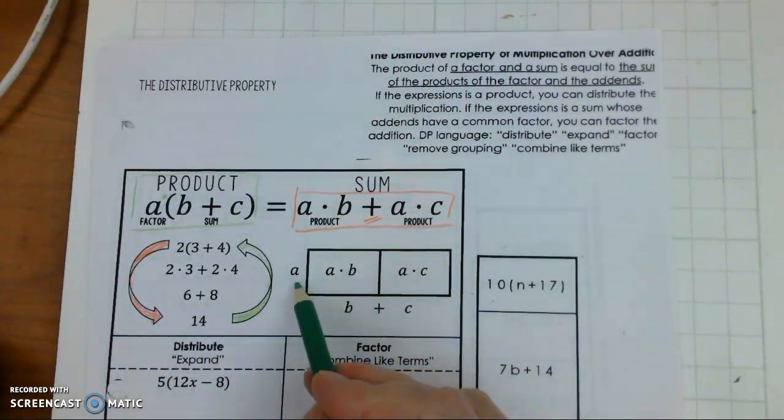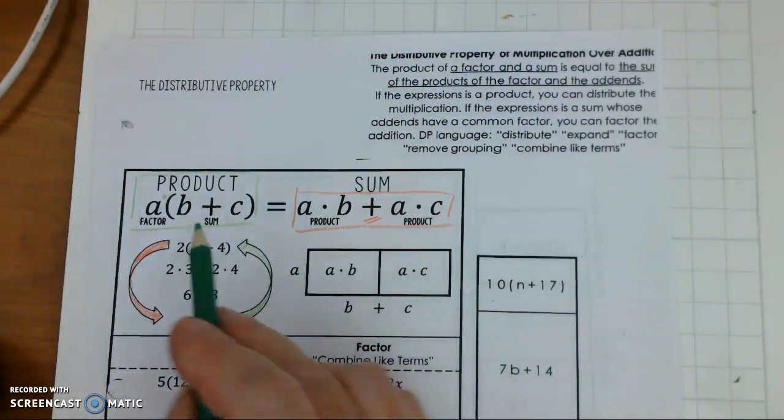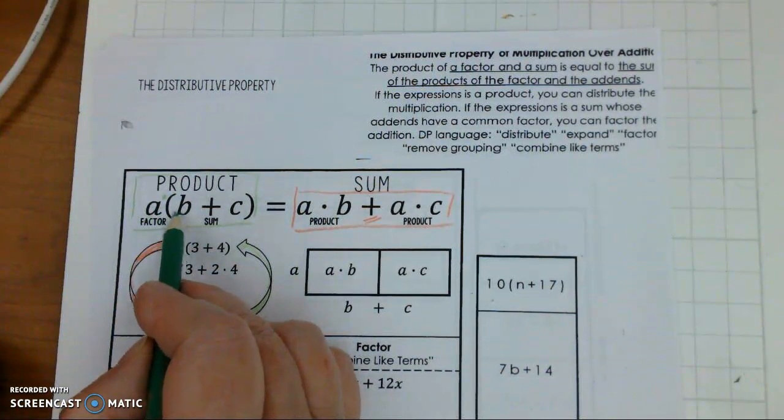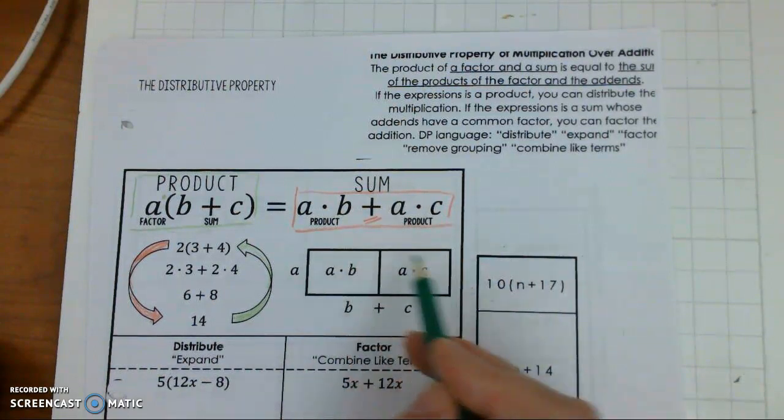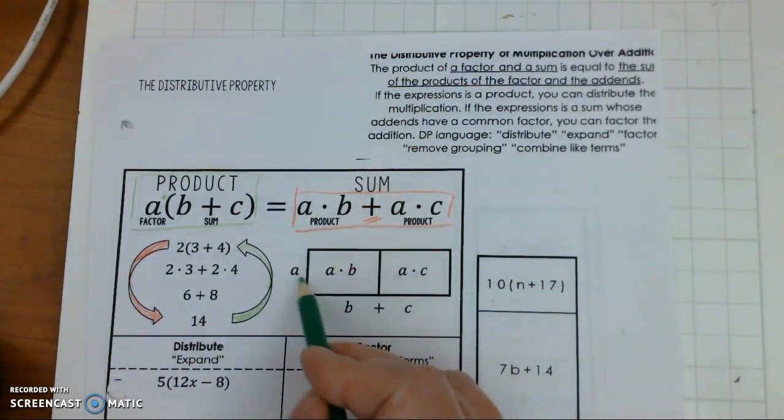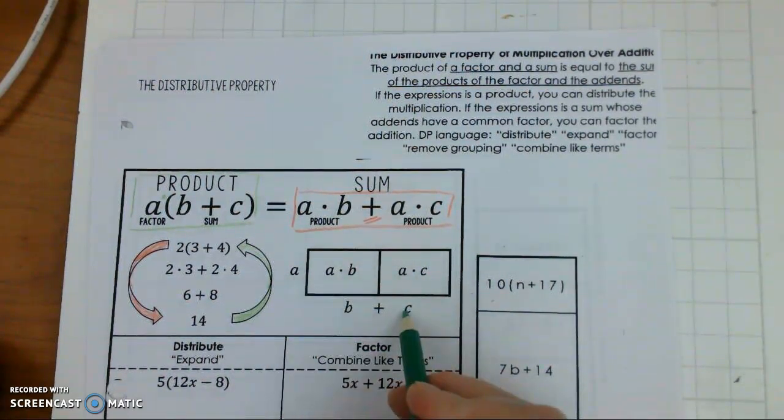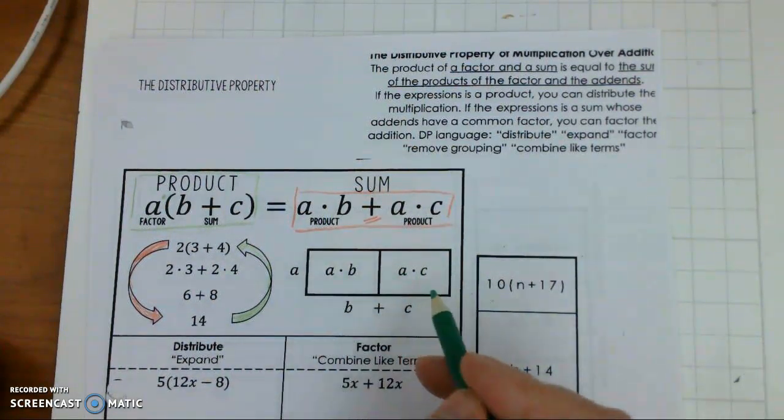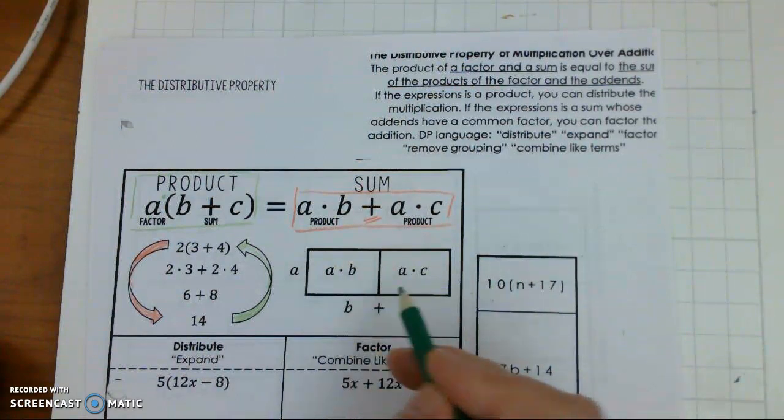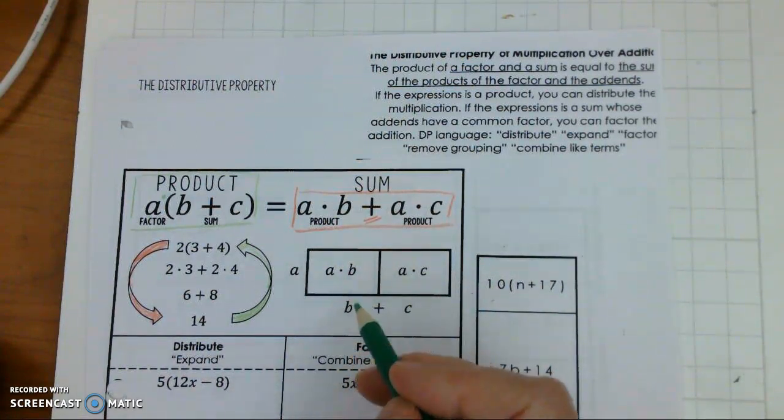And here, when you see this, a times b, a times c, you are looking at this, a times b, a times c. So a times b gives you here, a times c. So if it helps you understand doing it in a distribution like this, you can always make a table.